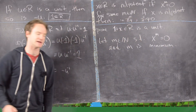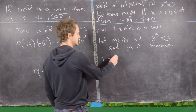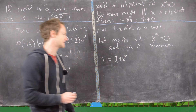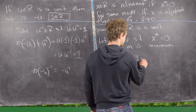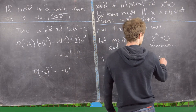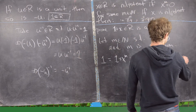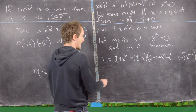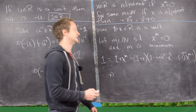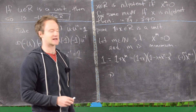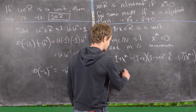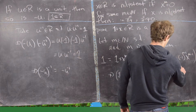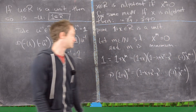Notice that the identity equals 1 plus x to the m, which is just 1 plus 0. This right-hand side factors as 1 plus x times 1 minus x plus x squared minus x cubed, and so on, up to the term negative 1 to the m-minus-1 times x to the m-minus-1. So 1 plus x is a unit, and its inverse is 1 minus x plus x squared minus x cubed, all the way up to negative 1 to the m-minus-1 times x to the m-minus-1.